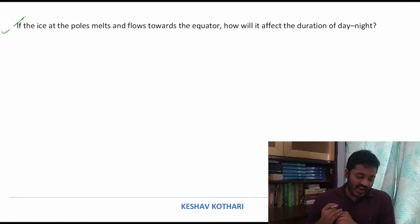This question asks: if the ice at the poles melts and flows towards the equator, how will it affect the duration of day and night? This is a very interesting question. If I look at the duration of day and night, if it is Earth and its poles and it is rotating about its axis with a certain omega, the time duration is written as 2π by omega.